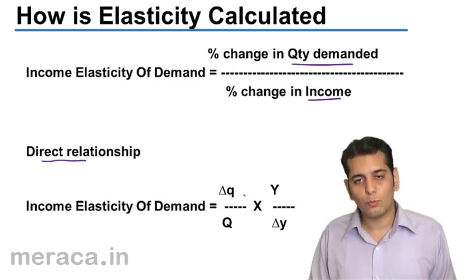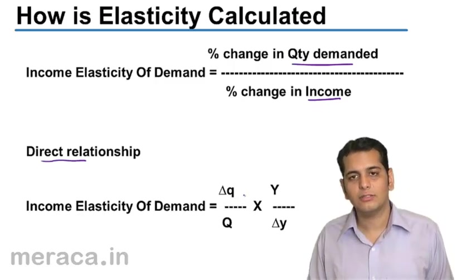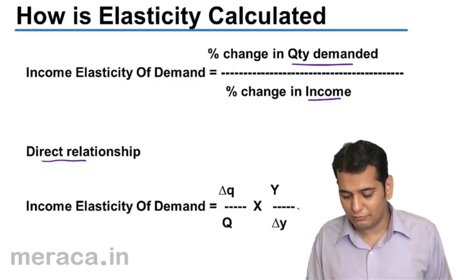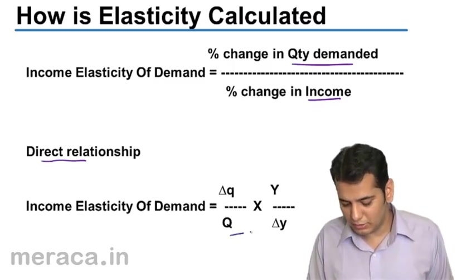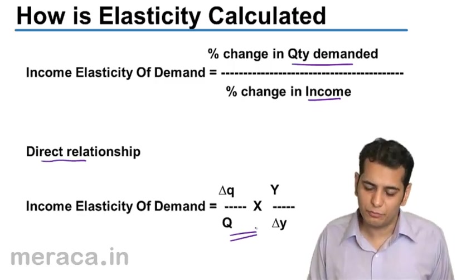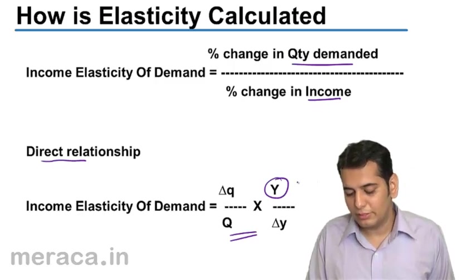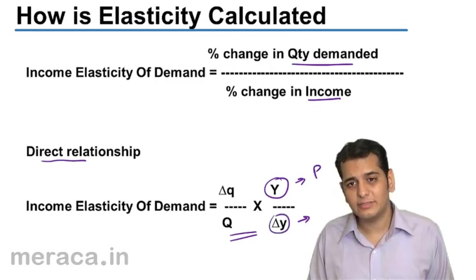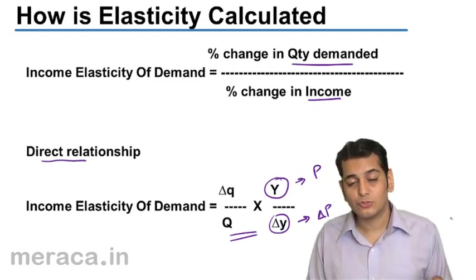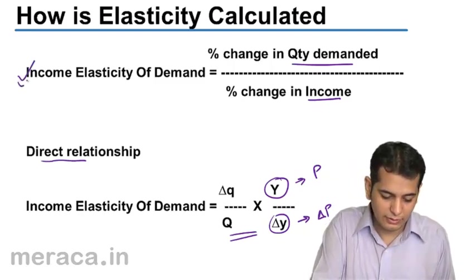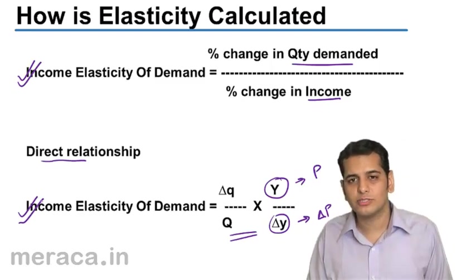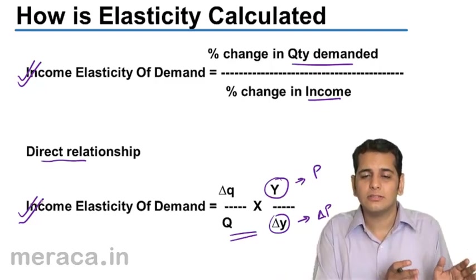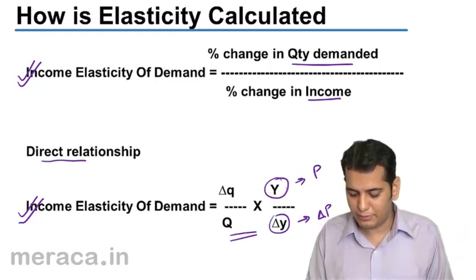We also have a second formula to calculate income elasticity of demand: change in quantity divided by original quantity, multiplied by original income divided by change in income. This formula is similar to the price elasticity formula — the only difference is that income replaces price in the denominator.